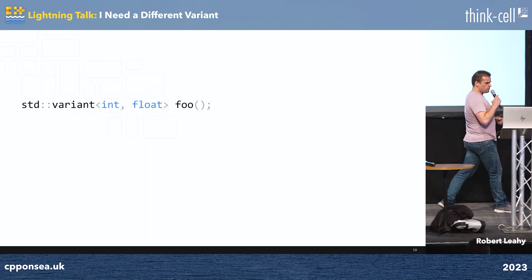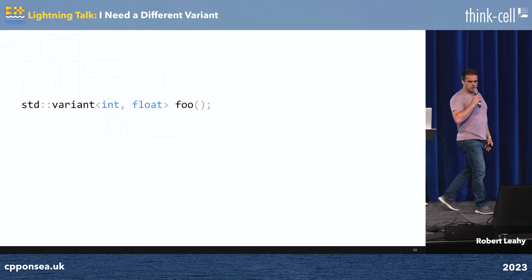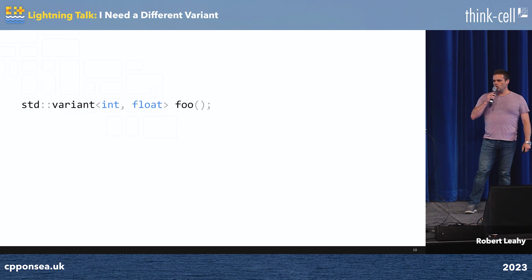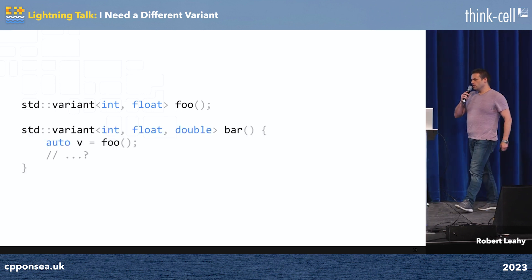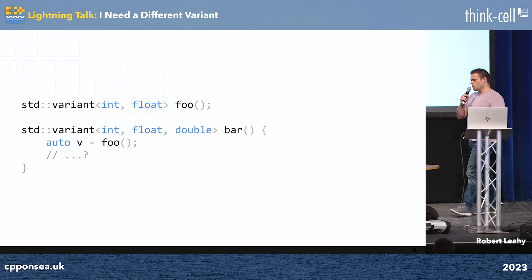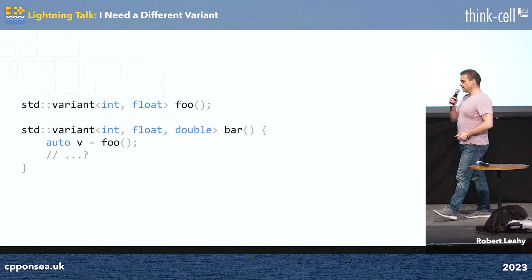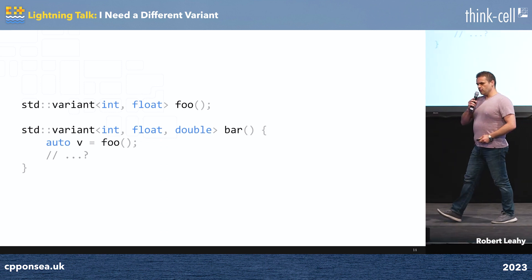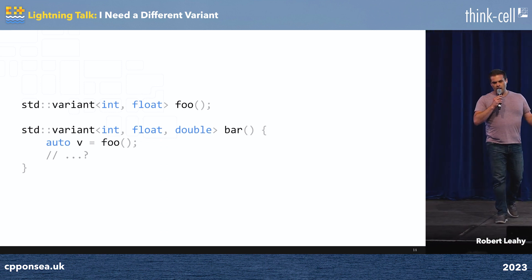Because what happens if you find yourself in this situation? You have a function, it returns a variant, and the variant has two alternatives. But for some reason, you want to write another function that uses it, but returns a variant with a different superset set of alternatives. What are you going to write in that commented out section? Are you going to write something ad hoc, one-off?